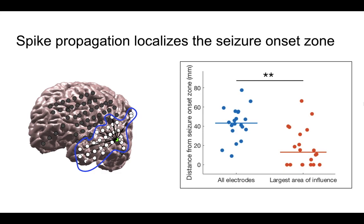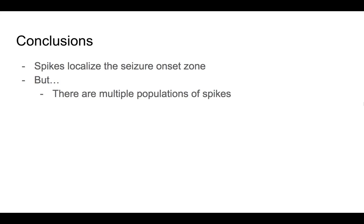And so to summarize, spikes do seem to localize the seizure onset zone, but there are multiple spike populations whose spatial distribution changes over time.